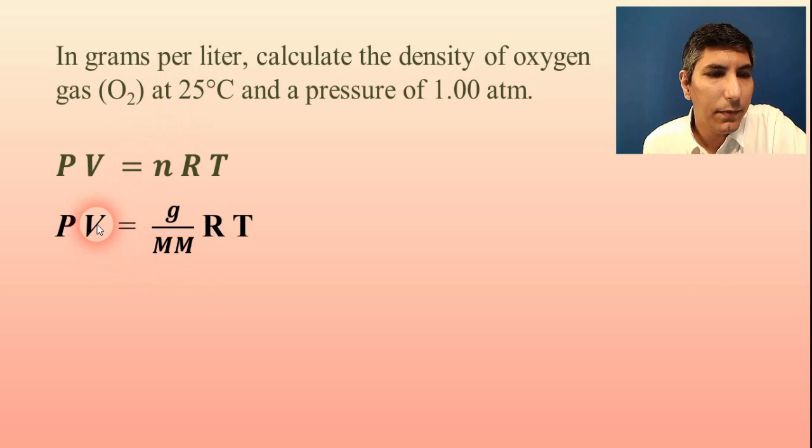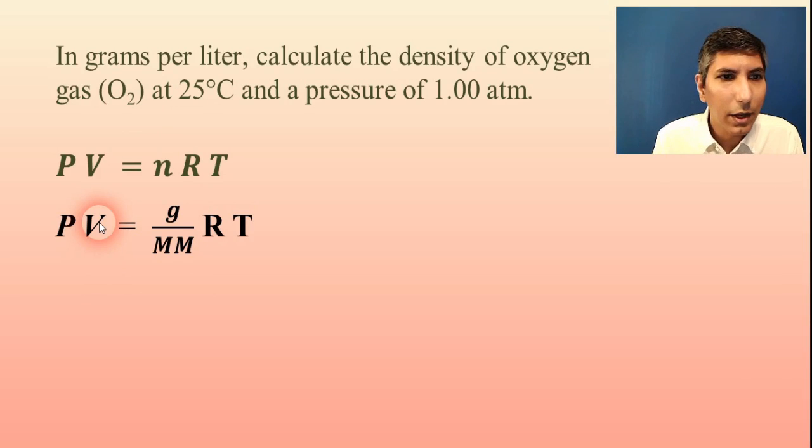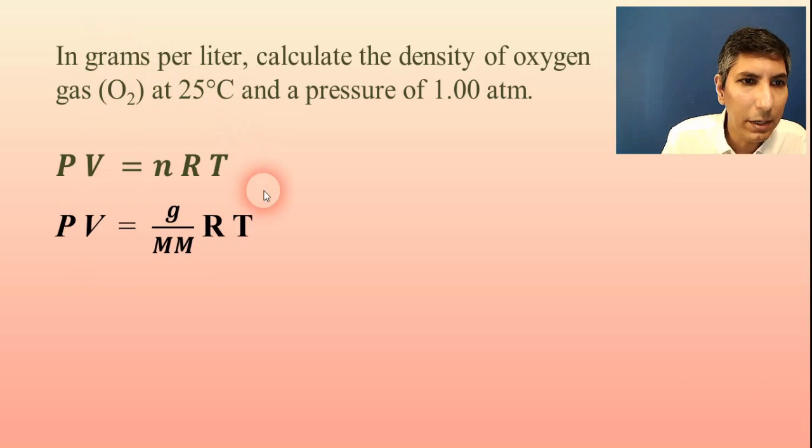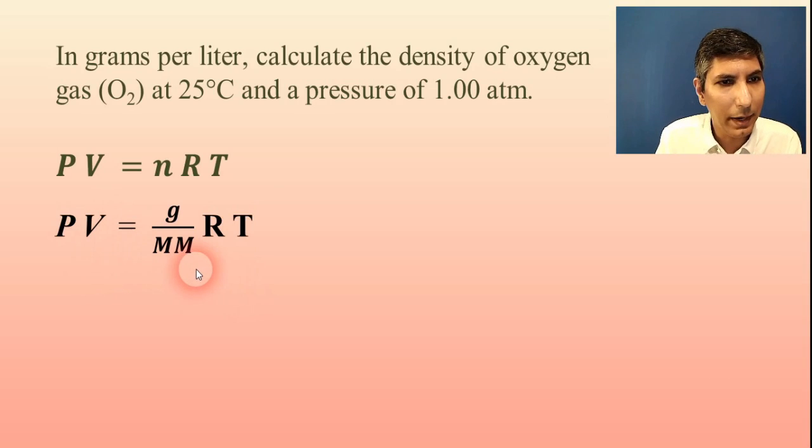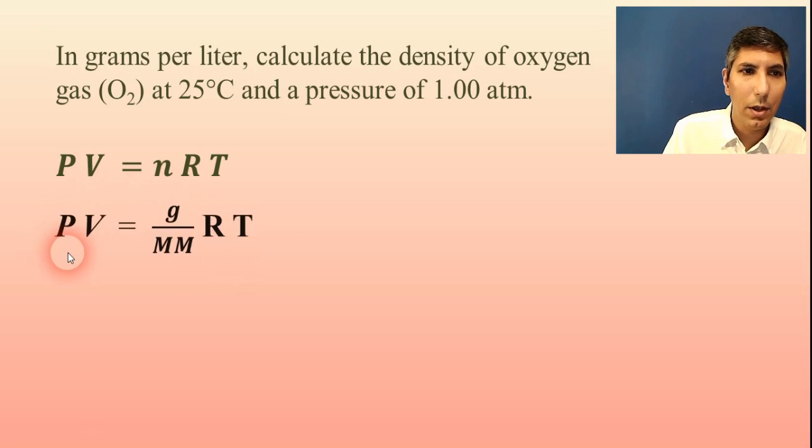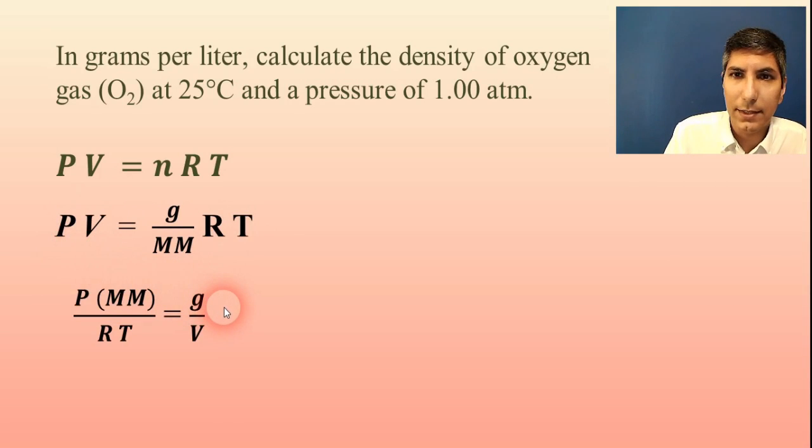Now, V is liters, right? So I'm going to rearrange this equation so that I have grams per liter, basically grams divided by volume. And so when I do that, I'm going to have to bring the V to the opposite side, the same side as grams. I'm going to have to bring the RT and the MM to the side as the P. So when I do that, the equation looks like this.